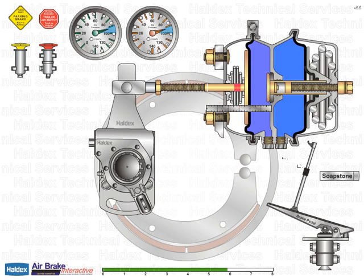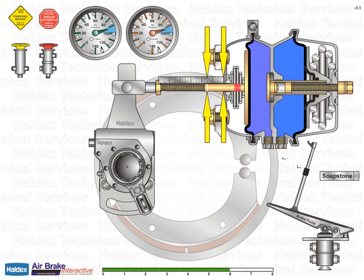Now measure the distance that each push rod has stroked by measuring the distance from the face of each brake chamber to the mark previously placed on the push rod. Be sure to place the measuring device firmly against the brake chamber face.